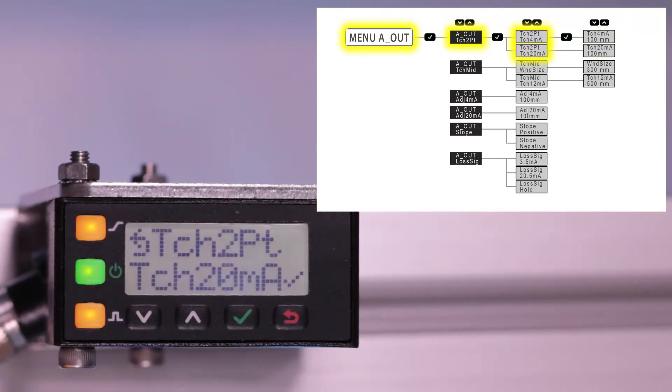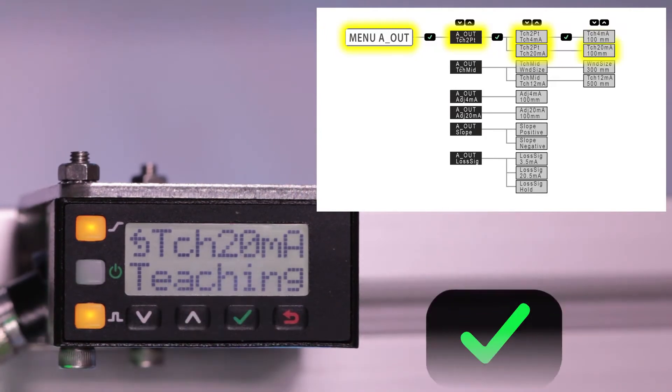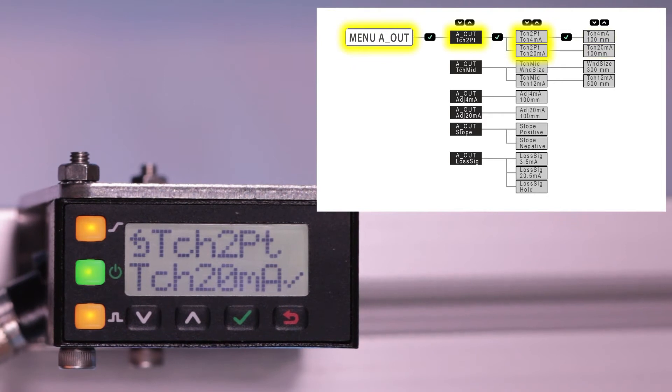Present a target, click Enter, and the sensor will automatically teach the 20mA point based on the position of the outer diameter of this roll.